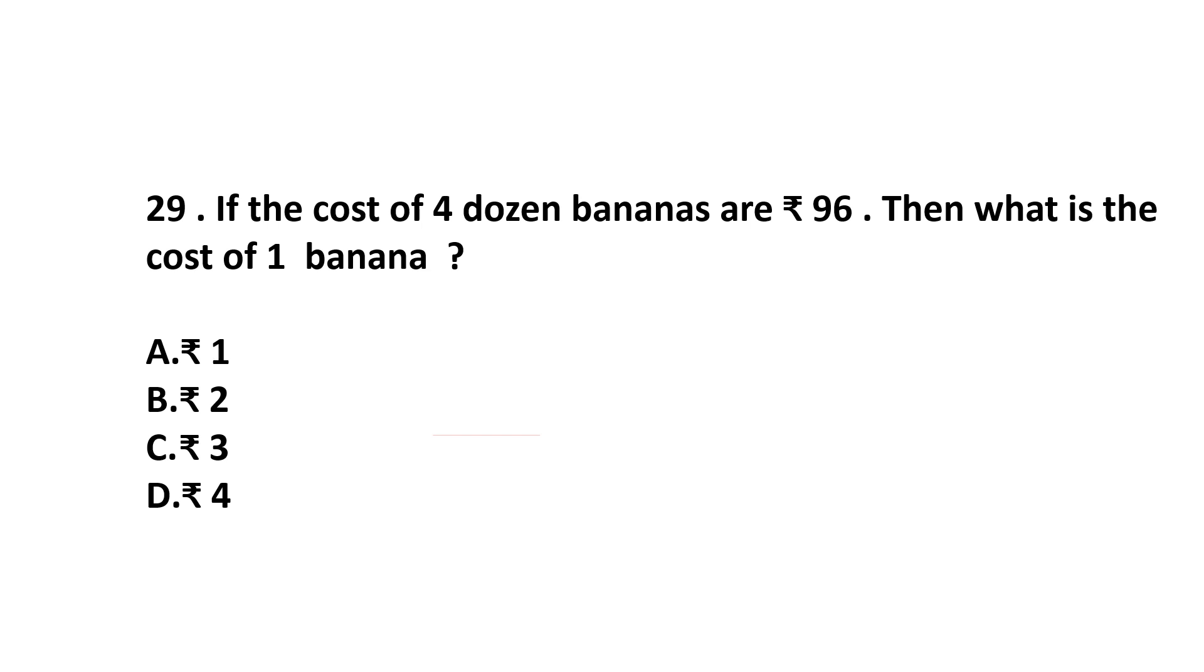Question number 29. If the cost of 4 dozen bananas is Rs. 96, then what is the cost of 1 banana? Cost of 4 dozen bananas. How many bananas are there in 4 dozen? So 12 multiplied by 4 because 1 dozen is 12. 12 multiplied by 4 is 48. Total 48 bananas cost Rs. 96. The cost of 1 banana is 96 divided by 48, and 48 multiplied by 2 is 96. So the cost of 1 banana is 2 rupees. Answer is Option B.